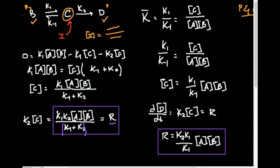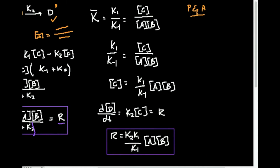In pre-equilibrium approximation I need to make a really important distinction. I'll use rate constants, but I also need to use the equilibrium constant. A rate constant is the little k; the equilibrium constant is the big K. You can denote the equilibrium constant as K_eq, or some people write a big K with a line over the top to indicate it's capital. That's how I'm going to distinguish it.